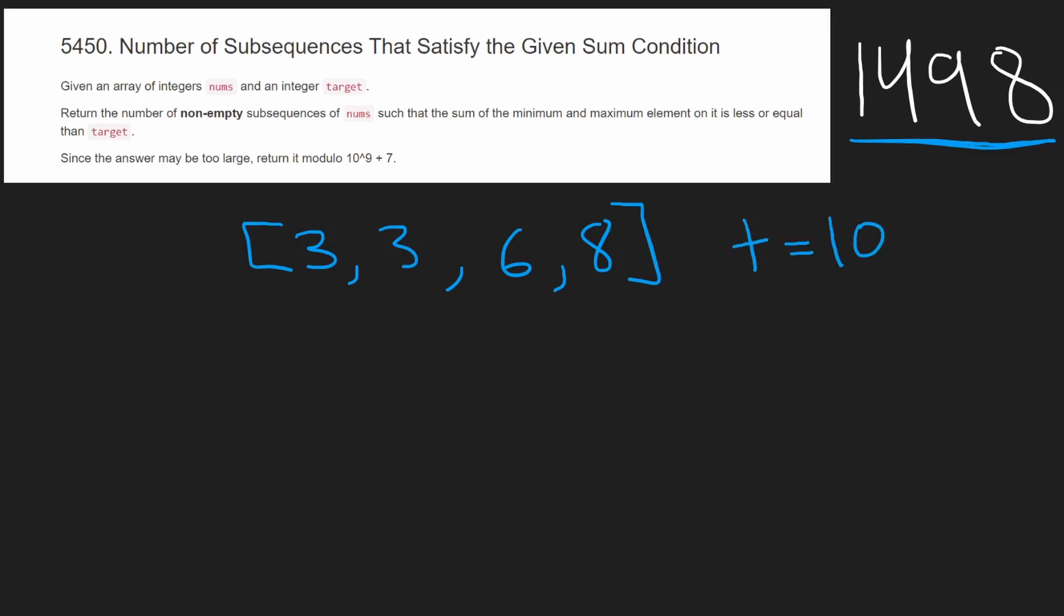We want to count every subsequence from this array where the minimum and maximum values will sum to less than or equal to our target. And the subsequences have to be non-empty, so we can't just call this part of our result.